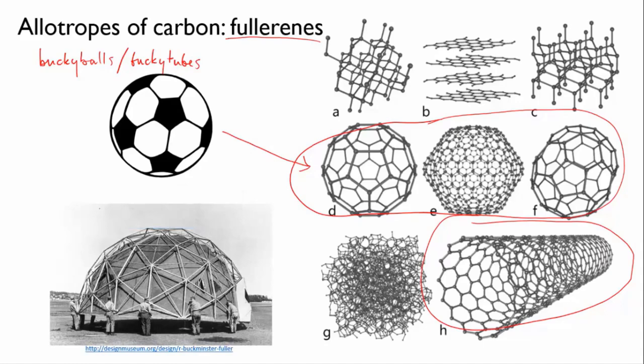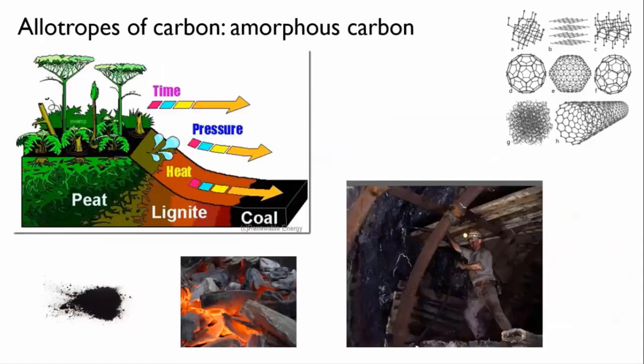The last allotrope, and perhaps the one that's most important to all of us right now, is amorphous carbon, or as you might know it, coal or charcoal or soot. In this allotrope, the carbon atoms are joined together rather randomly, amorphously in fact, giving no long-range structure. It's black and hard, but it's not particularly strong because the random arrangement of bonds means that they're not in the most stable configuration, which weakens the overall structure.